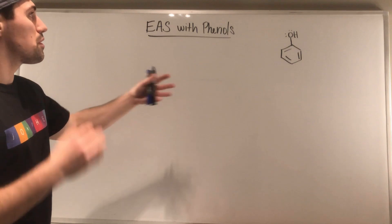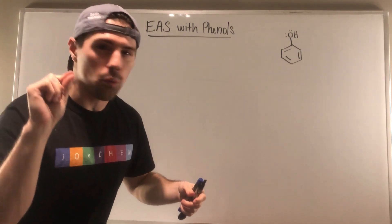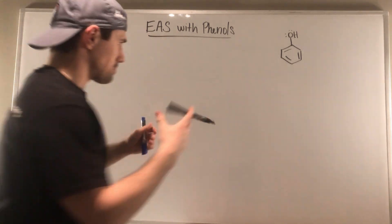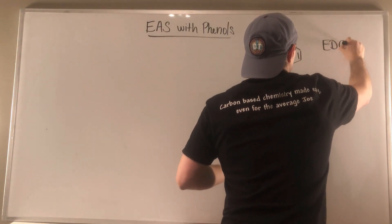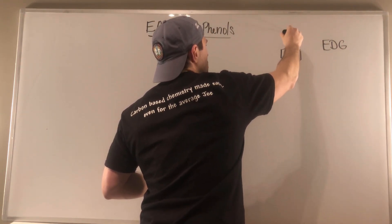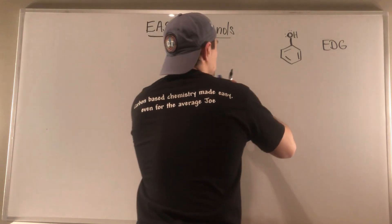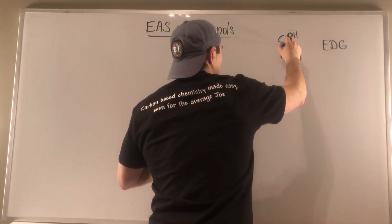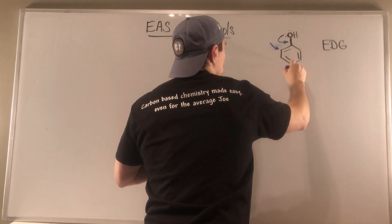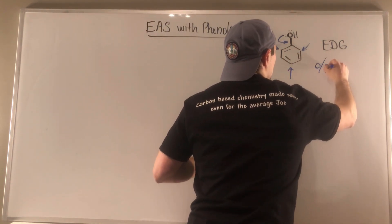EAS with phenols — pretty much business as usual. Everything you've learned applies directly with just maybe one little caveat, and I'll explain why, it'll make sense. With phenol, we know this OH group is an electron-donating group, because we know this is an electronegative atom directly attached to our benzene ring — that's what we look for when determining EDG or EWG. We know that it pumps electrons into the benzene ring, putting lone pairs on our ortho, para, and ortho positions. So it's an EDG and an ortho-para director.